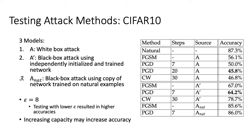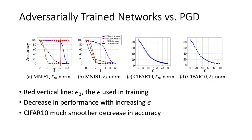The authors note that increasing this model's capacity may increase accuracy. Here we have the performance of adversarially trained networks against L-infinity PGD with different epsilons. The models are trained with PGD input bounded by either L-infinity or L2. The MNIST model is also tested against the decision boundary attack with 2000 steps. Across the board, we see that increasing epsilon decreases model performance. We also notice that the MNIST model is successful against another first order attack called DBA, even though the model was not trained against DBA.